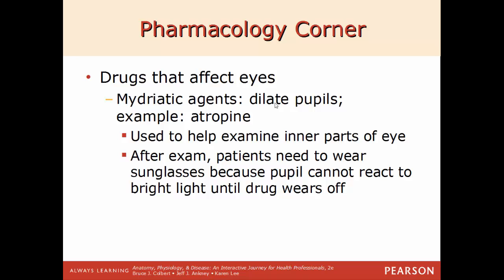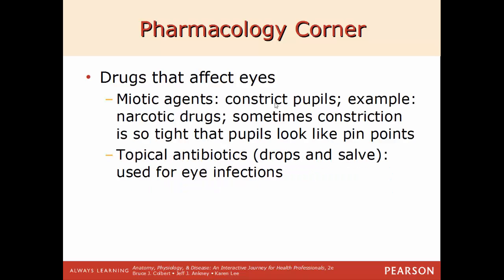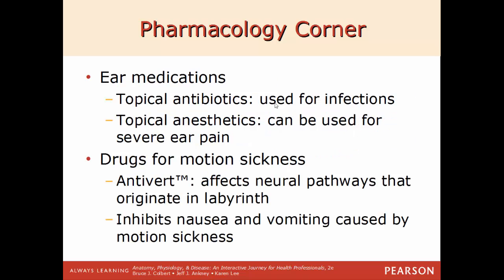Pharmacology corner: drugs that affect the eyes — mydriatic agents dilate the pupils; an example is atropine, used when you go to an optometrist to examine the inner parts of the eye. After the exam, you need to wear a protective film over your eyes because even sunlight on a cloudy day can be very uncomfortable with pupils so dilated. Miotic agents constrict the pupils — for example, narcotics, where constriction can be so tight the pupils look like the points of a pen. Topical antibiotics in drop or salve form are used for eye infections. For ear medications: topical antibiotics are used for infections, topical anesthetics for severe ear pain. For motion sickness: antiverts affect neural pathways originating in the labyrinth, inhibiting nausea and vomiting by limiting how much the brain perceives movement. That brings us to the end of chapter 11.